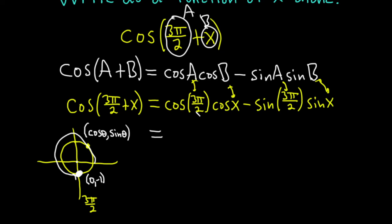So this means that cosine of 3π/2, well the x coordinate is 0. So this is 0 times the cosine of x minus, and then sine of 3π/2, well that's the y coordinate at 3π/2, that's negative 1. And then we have the sine of x.